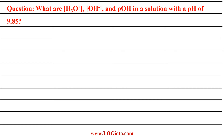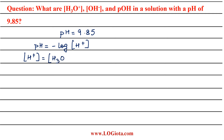We start with pH = 9.85. We know that pH = -log[H⁺], so from here we can say that [H3O⁺] = 10 raised to the power of minus pH. Putting in the value, we get 10 raised to the power of minus 9.85, and on calculating this we get 1.41 × 10⁻¹⁰.